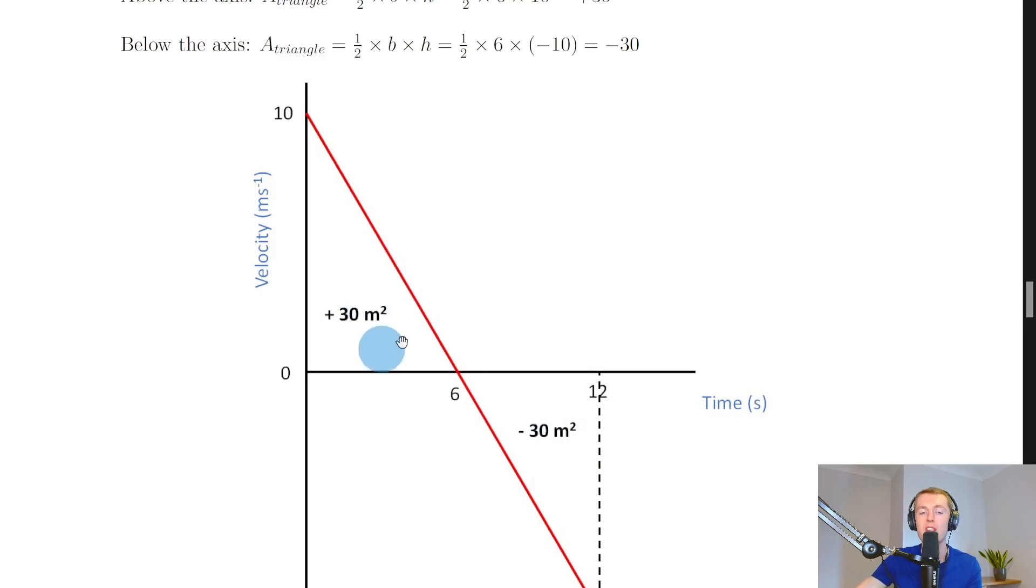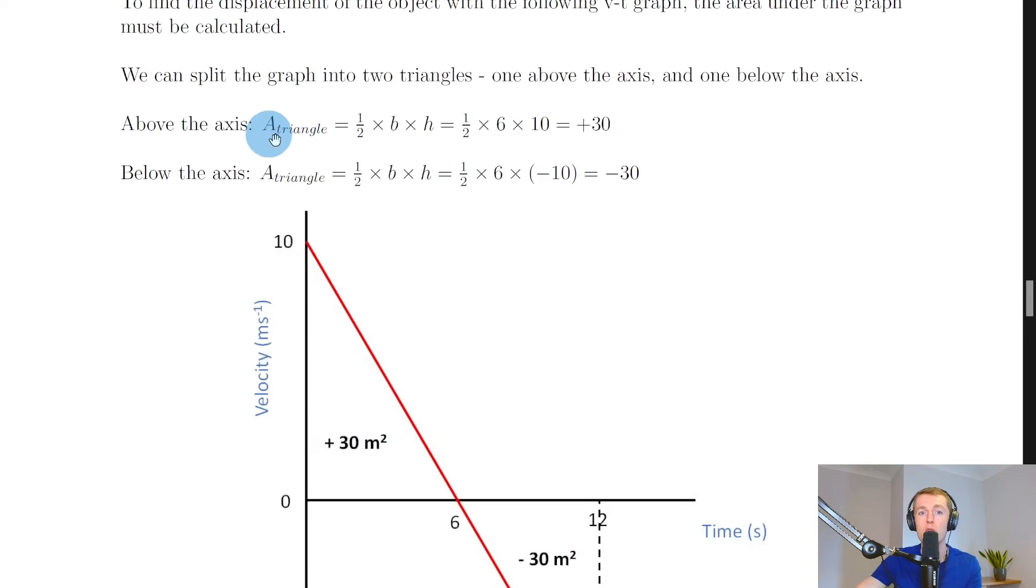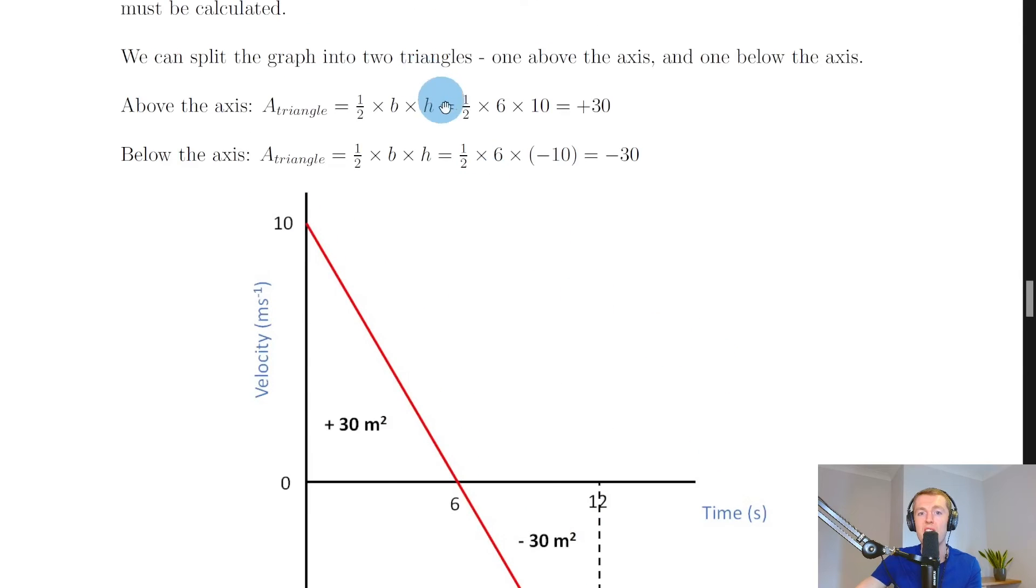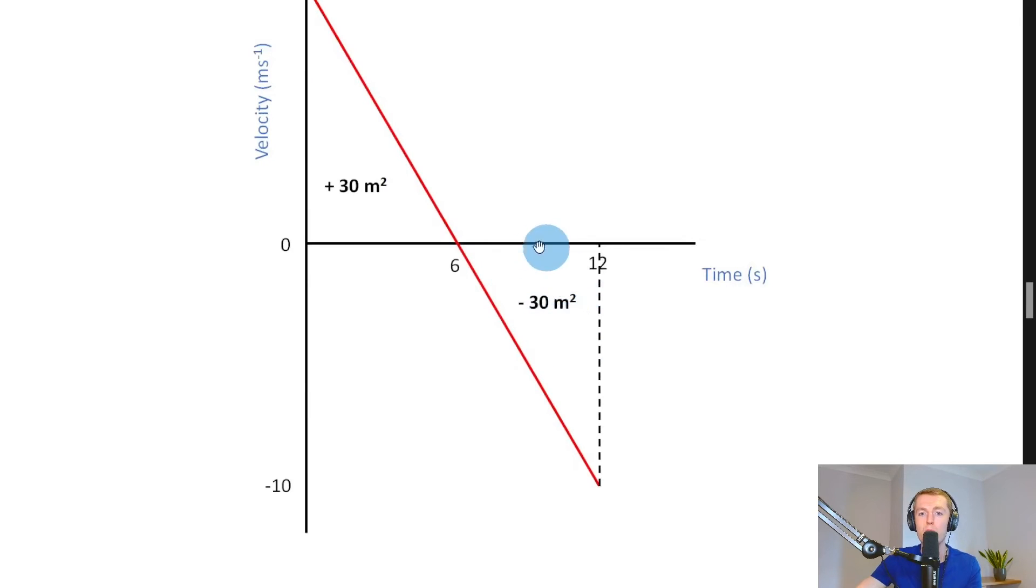To find the area of this triangle I'm going to do a half times base times height so I've got a triangle equals a half times b times h. Putting in those values we've got a half times 6 for the base times 10 for the height. So that's a half times 6 times 10 which gives me 30.